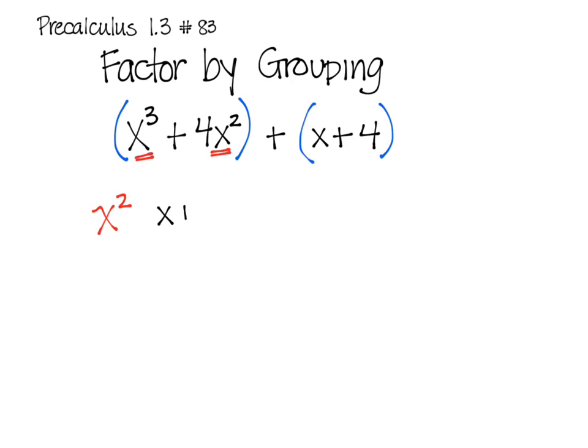And when I do that, I'm still left with x plus 4, and then I have x plus 4 in the other group. These two do not have anything common other than a one. So I pull the one out just so you can see it. And we notice now that both of these groups have a common factor of x plus 4.